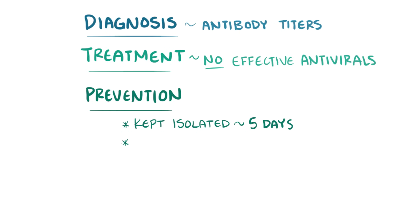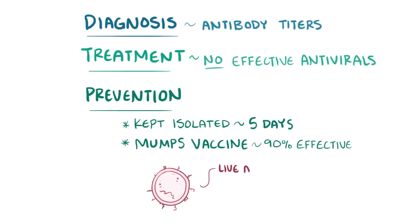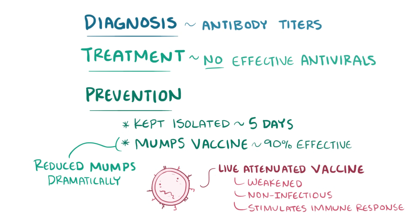Best of all for prevention is the mumps vaccine, which is about 90% effective at preventing the disease in the first place. The vaccine is a live attenuated vaccine, meaning it's a weakened mumps virus which is not infectious, but still stimulates the immune system to generate a strong response to prevent a future infection from the actual wild-type mumps virus. The mumps vaccine has reduced the occurrence of mumps dramatically, with outbreaks happening most often in areas where children aren't vaccinated.